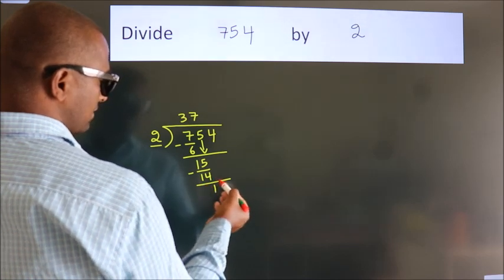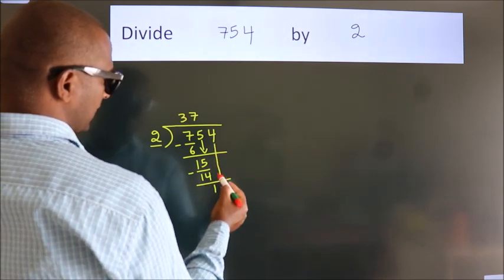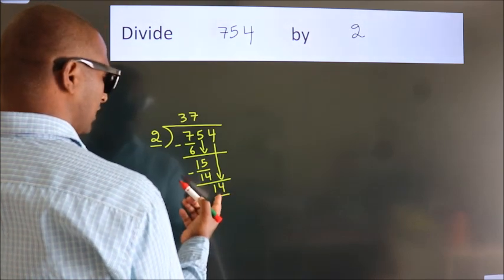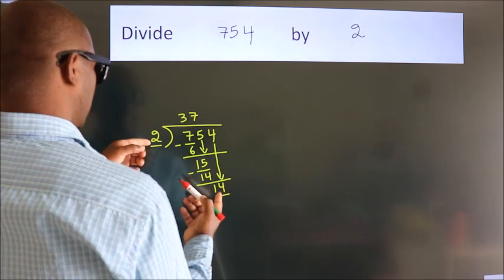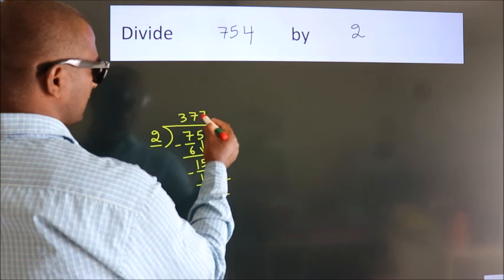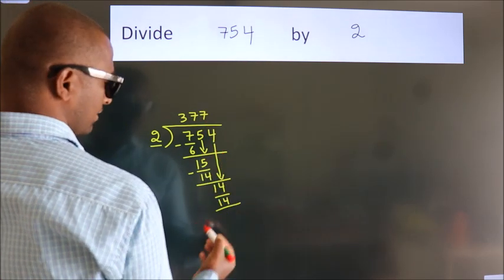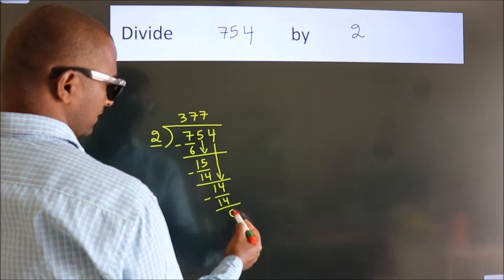After this, bring down the beside number. So 4 down, making 14. When do we get 14 in the 2 table? 2 times 7 is 14. Now we subtract. We get 0.